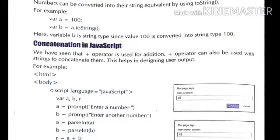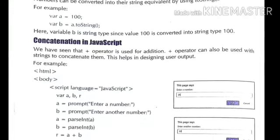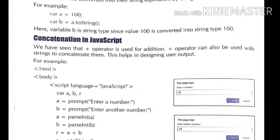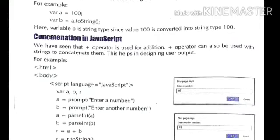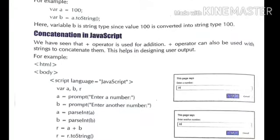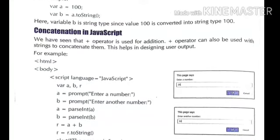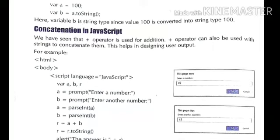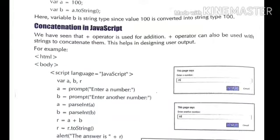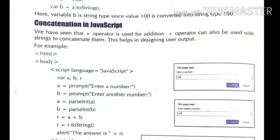In JavaScript, the plus operator can also be used with strings to concatenate them — meaning joining two strings together. This helps in designing your user output. For example, in HTML body with script language equals to JavaScript, var is used to declare variables a, b, r. The first value is taken from the user using the prompt function and stored in a; the second variable b also gets a second value from the user.